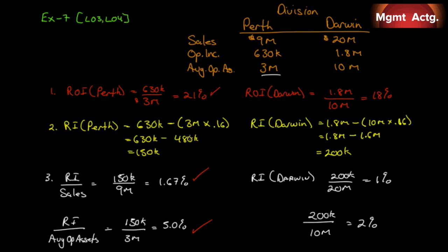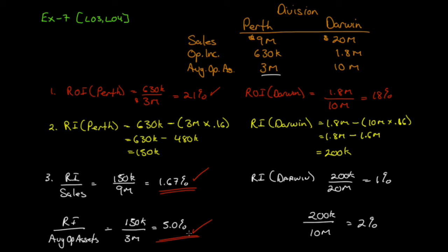This really comes down to the difference in sales: $20 million for Darwin versus $9 million for Perth. Darwin's extra residual income is really just a function of its size. Once we control for size by dividing by sales and by average operating assets, the ratios are better in Perth, confirming that Perth is the better-managed division.